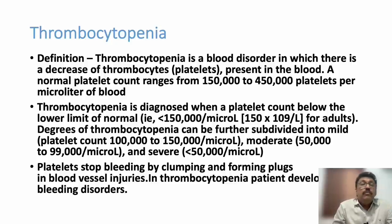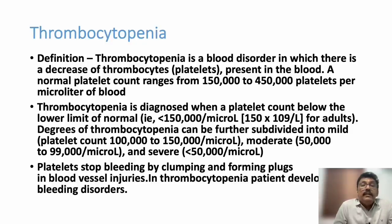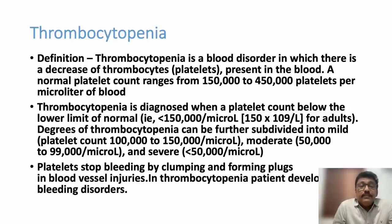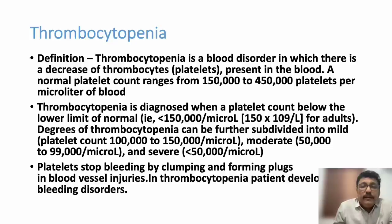Thrombocytopenia: normal platelet count is 150,000 to 450,000. Less than 150,000 is considered thrombocytopenia by some references; less than 100,000 by others. If there is a bleeding tendency with low platelets, it is clinically significant. More than 450,000 is thrombocytosis — in routine clinical practice this is mostly due to inflammation, such as in severe rheumatoid arthritis, often with raised CRP.